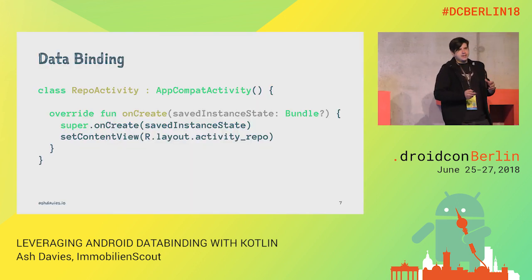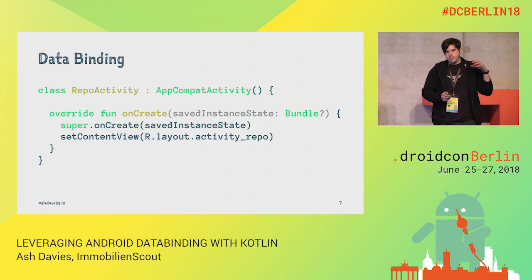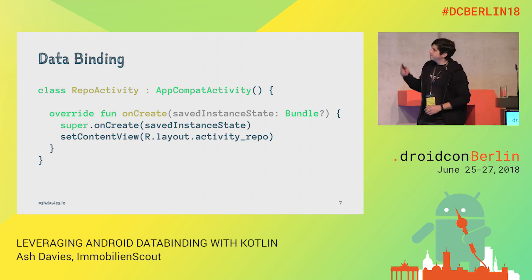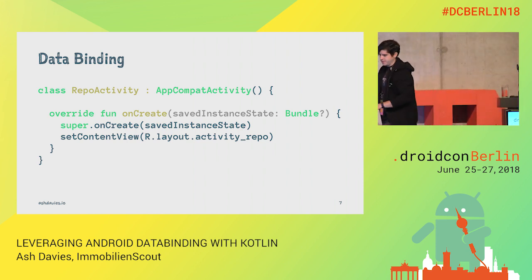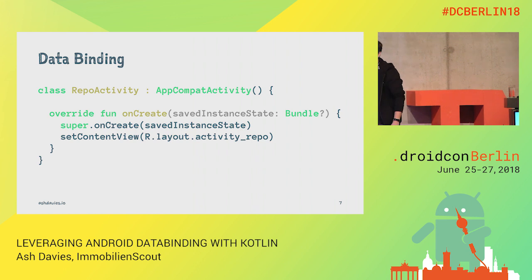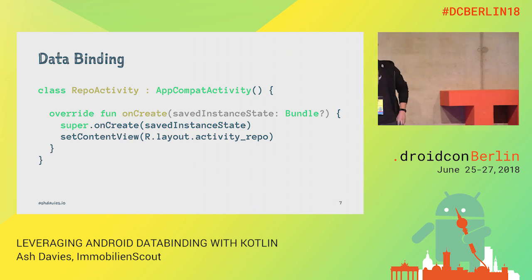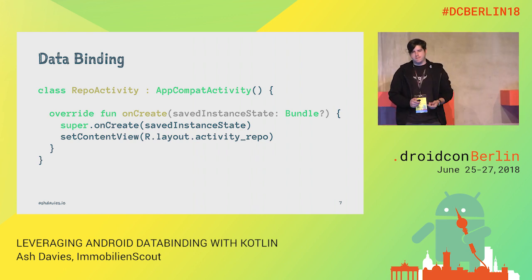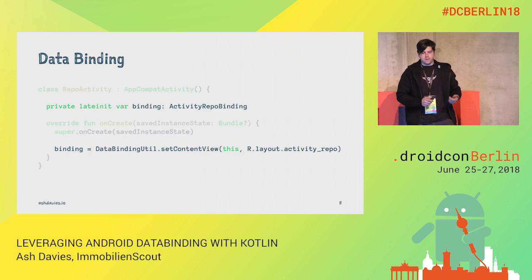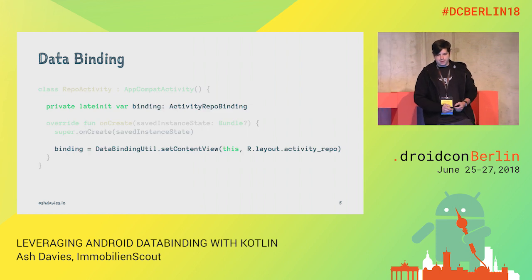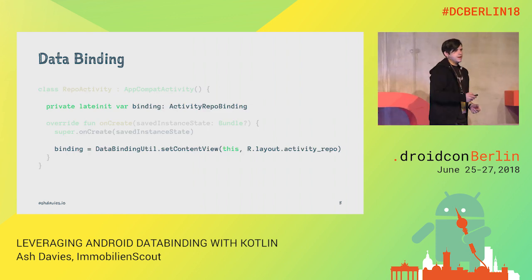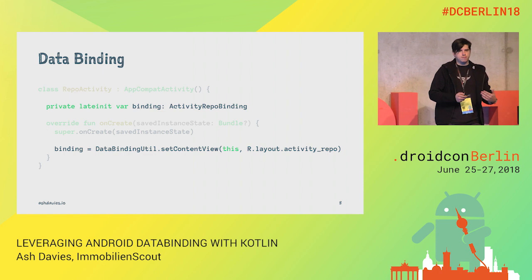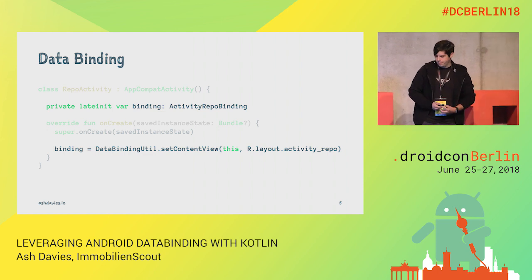Let's start with a basic activity and see how we can start using data binding. We want to make sure we replace the framework setContentView with that of the data binding utility to retrieve a binding class that has been generated for us that we can refer to in our code.